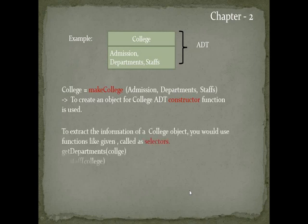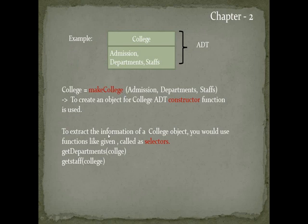Consider an abstract data type of College having admission, department, and staff. For example: college = make_college(admission, department, staff). To create an object for the College ADT, the constructor function make_college is used. To extract information from a college object, you use selector functions like get_departments and get_staff.